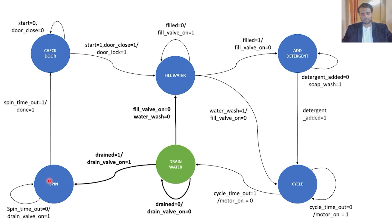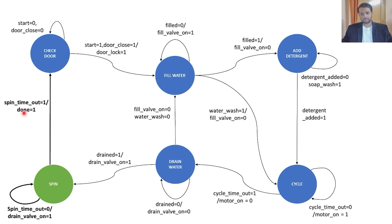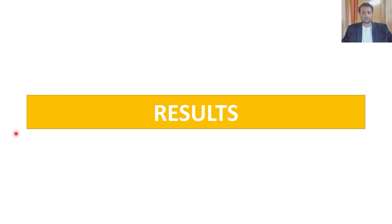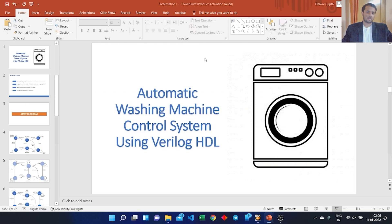Once both the soap wash and water wash are done, we drain out the dirty water and go to the spin state. In the spin state, which is for drying the clothes, we also turn on the drain valve to drain off water during spin. Once the spin timer is completed, the washing is done and we can remove the clothes. We have seen the state diagrams and learned how to transition among the different states for this project.